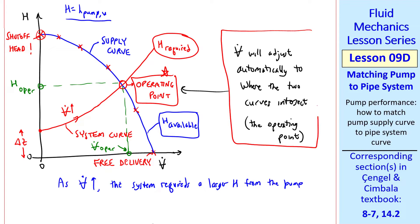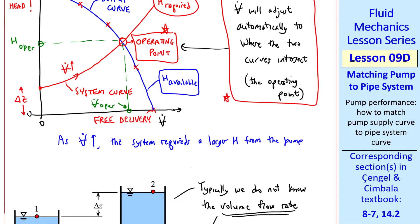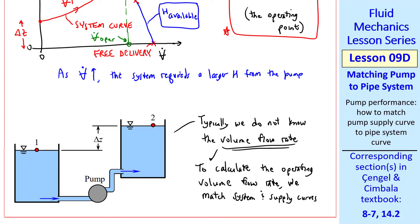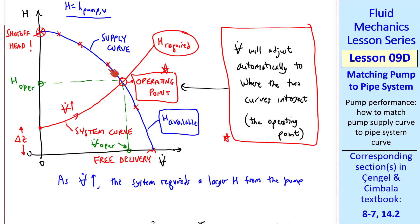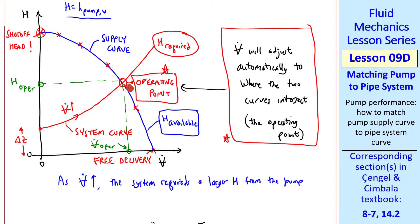In real life, this is what will happen. The flow will automatically adjust to the operating point. When we're trying to predict this mathematically, however, for a flow such as this one, we have to generate equations for both the supply curve and the system curve and then find out where they intersect, which will be the operating point. Let's do an example to illustrate this.